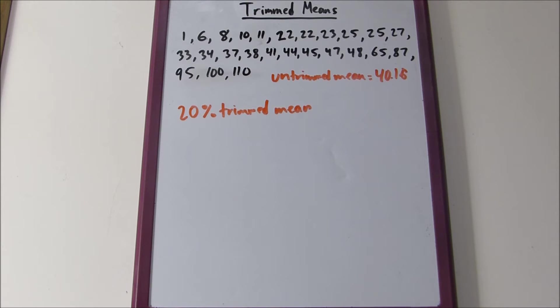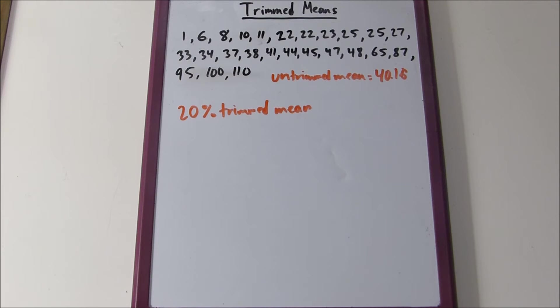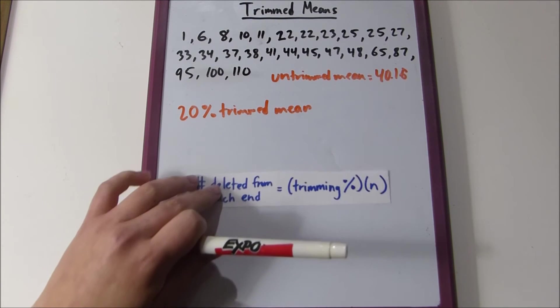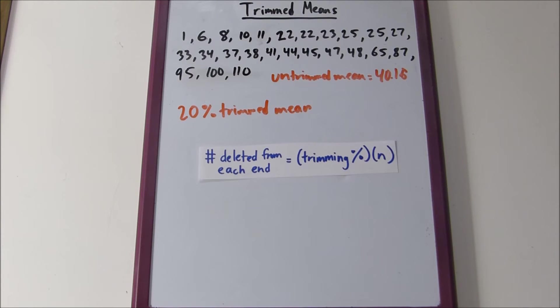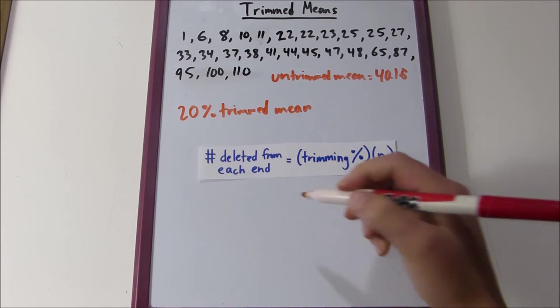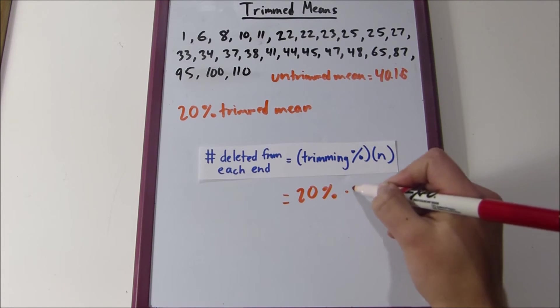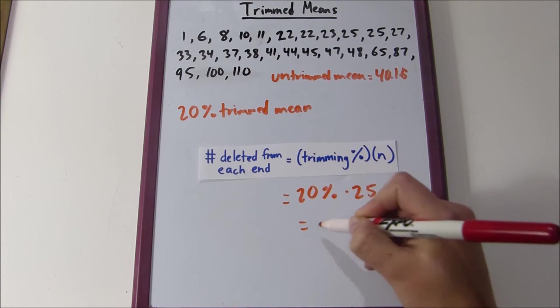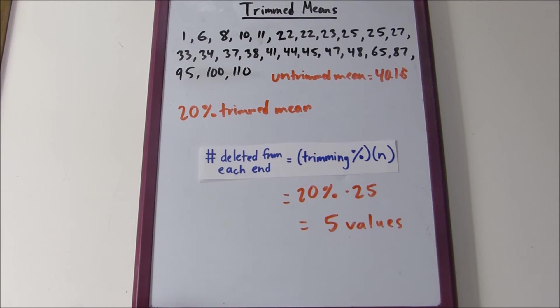Let's do this 20% trimmed mean. The way you find the number deleted from each end is this equation: number deleted from each end equals trimming percentage times the number of values in the distribution. We've got 20% and 25 values, which is 5.